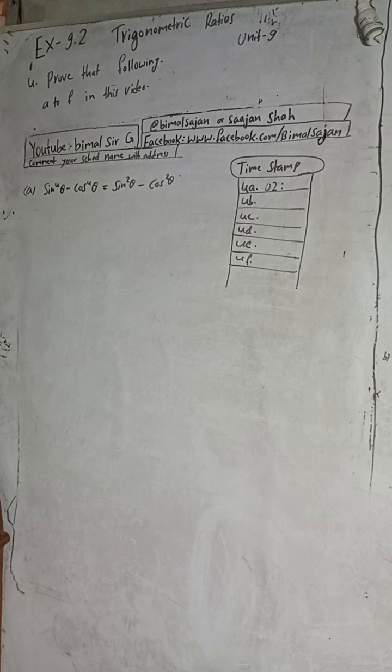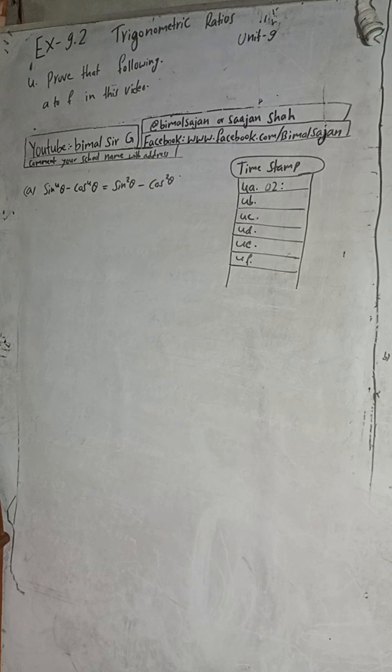Hi, class 9 and 10 students, welcome back to Vimal Sarji YouTube channel. This is question number 4, exercise 9.2, unit 9 — trigonometric ratios, optional mathematics. I have already solved questions 5, 6, 7, 8, 9 — I am going from last to first. Check the playlist and you will get class 9 and 10 solutions of optional math, compulsory math, and science.